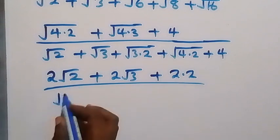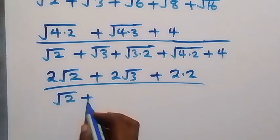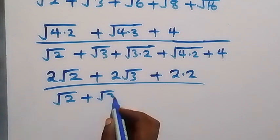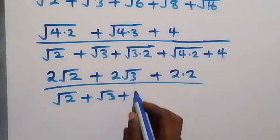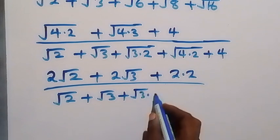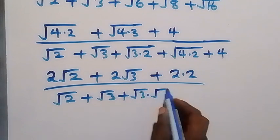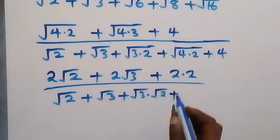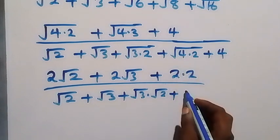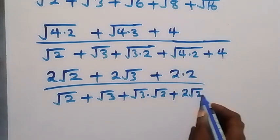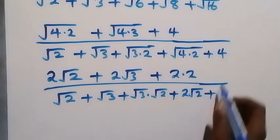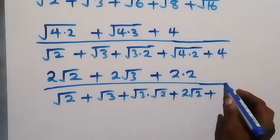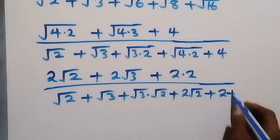In the denominator we have root 2, plus root 3, plus — separating the next term — root 3 times root 2, plus root 4 from here, and root 4 is 2, giving 2 root 2. Then that last term separates as 2 plus 2.